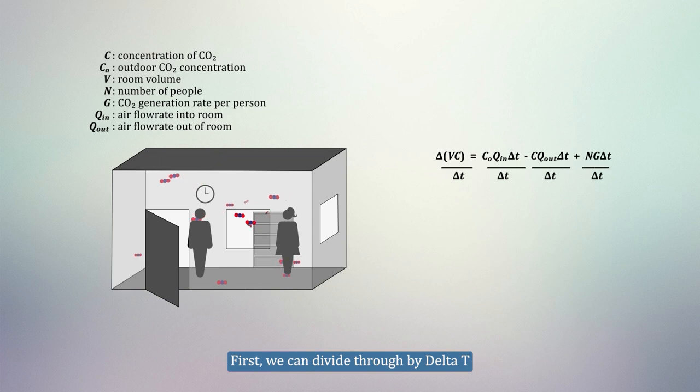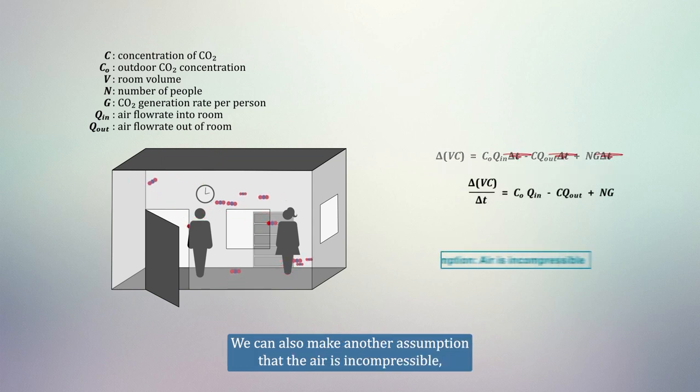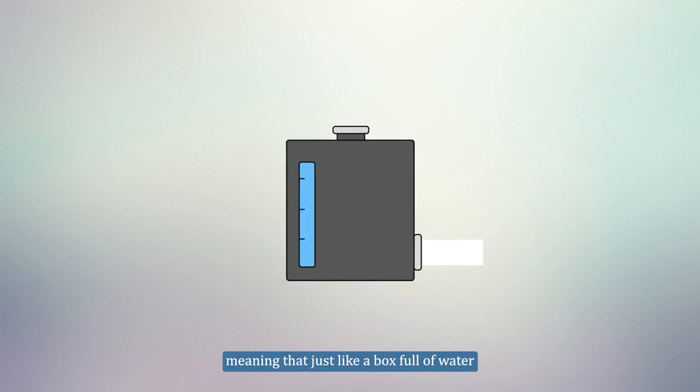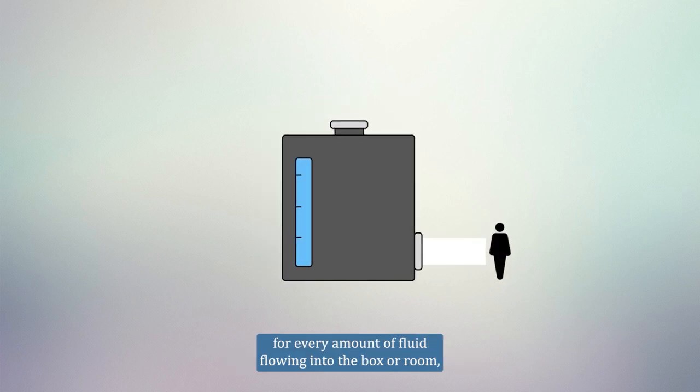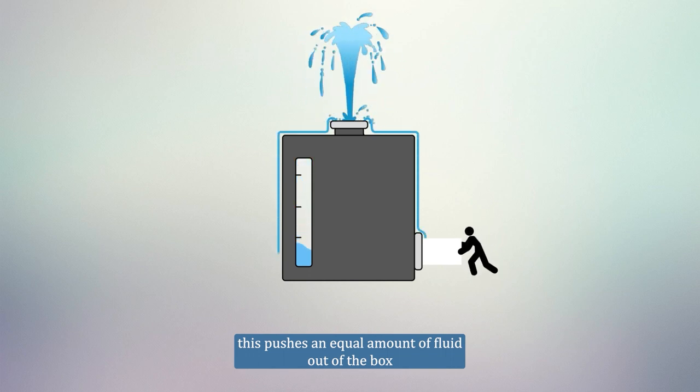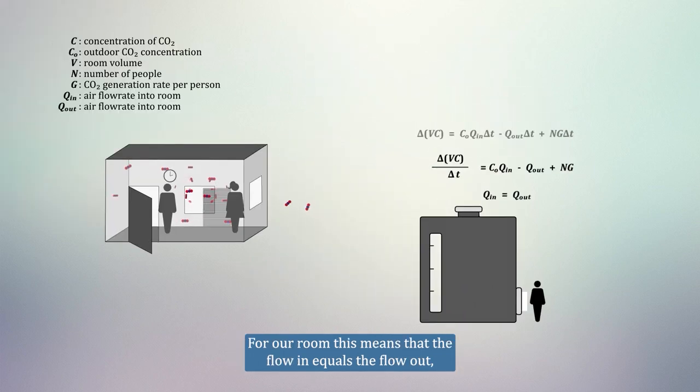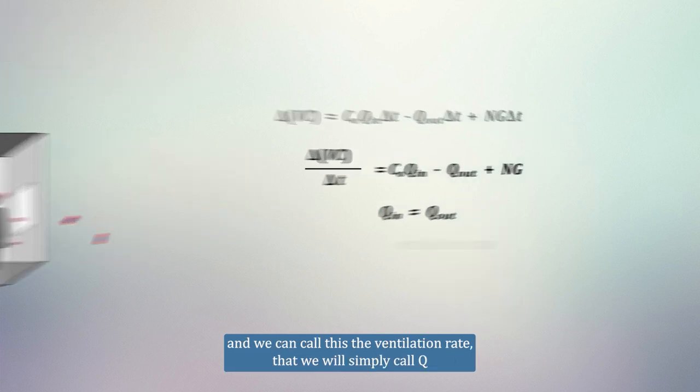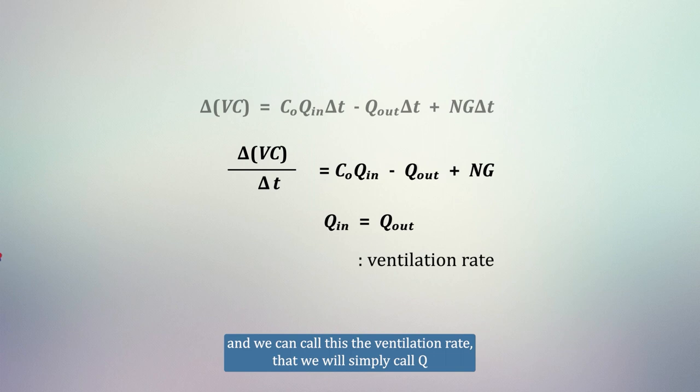First, we can divide through by delta T. We can also make another assumption that the air is incompressible. Meaning that, just like a box full of water, for every amount of fluid flowing into the box or room, this pushes an equal amount of fluid out of the box. For a room, this means that the flow in equals the flow out, and we can call this ventilation rate, that we will simply call Q.